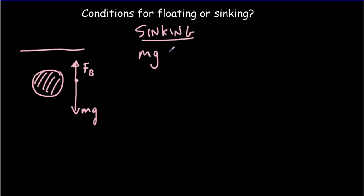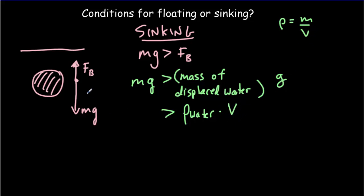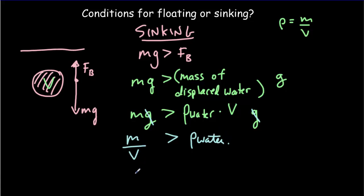For sinking, mg must be greater than the buoyant force. The buoyant force equals the weight of water displaced, which is the density of water times the volume of the object times g. Cancelling g from both sides, we get that mass over volume of the object must be greater than the density of water. But mass over volume is simply the density of the object — so the condition for sinking is that the density of the object is greater than the density of the fluid. We could repeat the process to find the condition for floating.